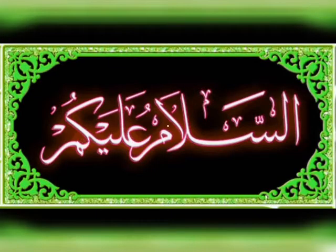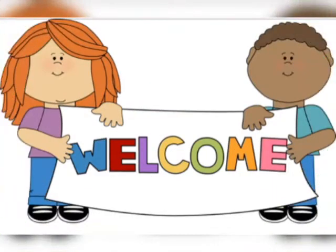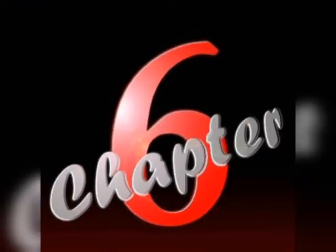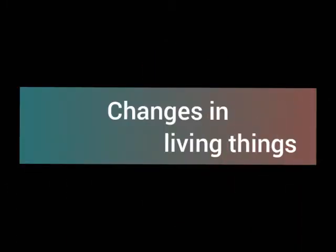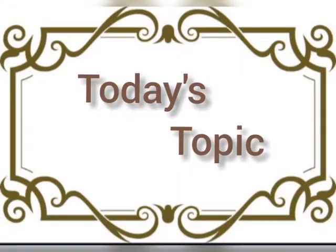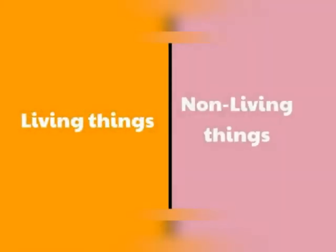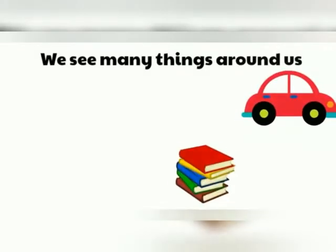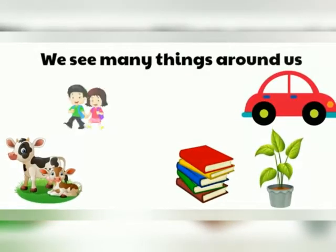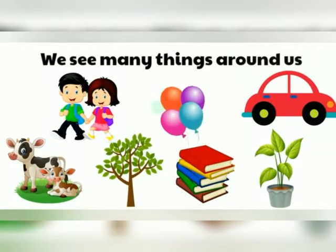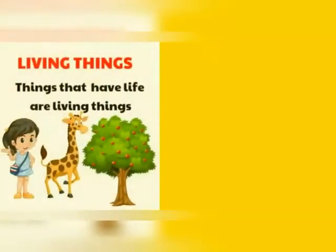Bismillahirrahmanirrahim. Assalamu alaikum. Welcome to our new lecture. As you know, we are reading chapter number six: Changes in Living Things. Our today's topic is the difference in living things and non-living things. We see many things around us, like car, books, land, cow, children, tree, and balloon. Are they living or non-living things? Let's read about the definitions.